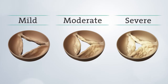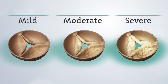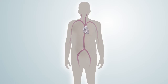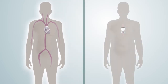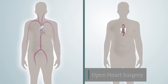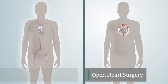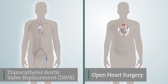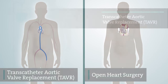It's typically measured as mild, moderate, or severe. The only effective treatment for severe aortic stenosis is to have your aortic valve replaced. Today there are two options for replacement: open heart surgery or less invasive transcatheter aortic valve replacement, also known as TAVR.